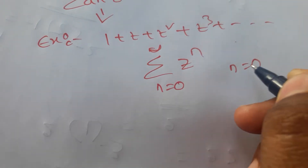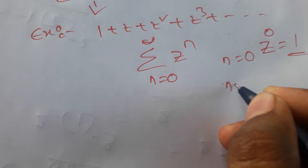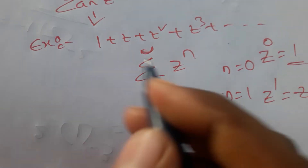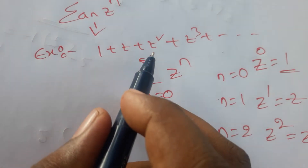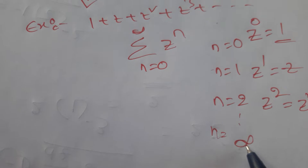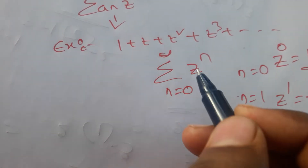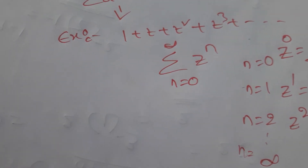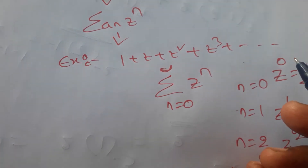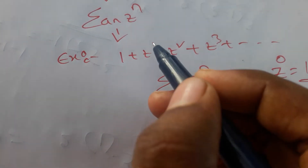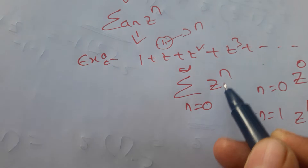If n=0, then z^n = z^0 = 1, so you get 1. Next, n=1 gives z^1 = z. Then n=2 gives z^2. Continuing up to n=infinity gives successive values. This series is written as summation from n=0 to infinity of z^n, because z is common to all terms and the powers change: 1, 2, 3, 4, 5 — so we denote the power as n.